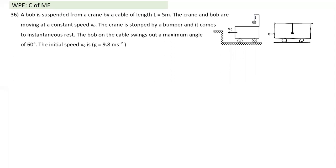If a bus suddenly comes to stop, the pendulum starts oscillating. The bus, being a rigid body, transmits forces instantaneously — every particle of the bus stops. But the pendulum bob cannot stop instantaneously because there is no impulsive force along its direction of motion; it's only connected by a string.